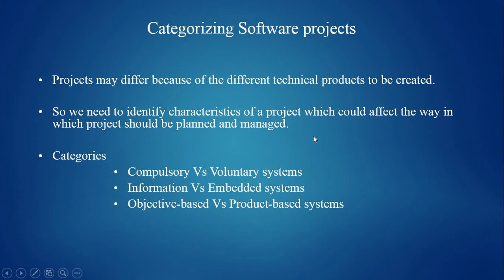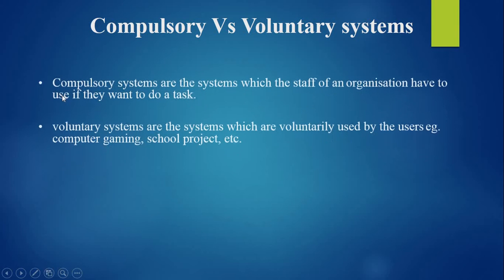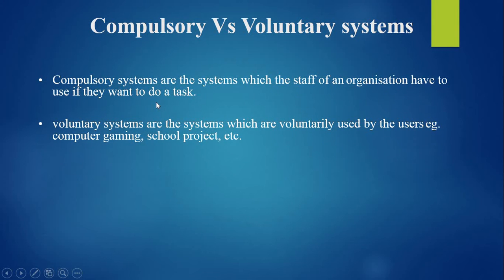First is compulsory versus voluntary systems. Compulsory systems are systems which the staff of an organization have to use if they want to do a task. Voluntary systems are systems which are voluntarily used by the user — for example, computer gaming, schooling projects, etc. In the workplace there are systems that staff have to use if they want to do something, such as recording sales.